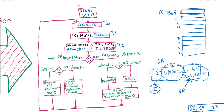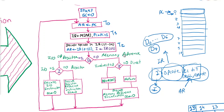If it is a memory reference instruction, the decoder output will be in the range D0 to D6. If it is a register reference or I/O reference instruction, the output will be at D7. To find out the type of instruction, we check D7. If D7 is zero, the output is in the range D0 to D6, meaning it is a memory reference instruction. Otherwise, we check the value of I: if I is 1, it is an I/O instruction; if I is 0, it is a register reference instruction. These determinations happen at timing signal T3.